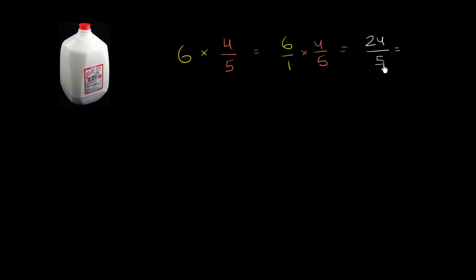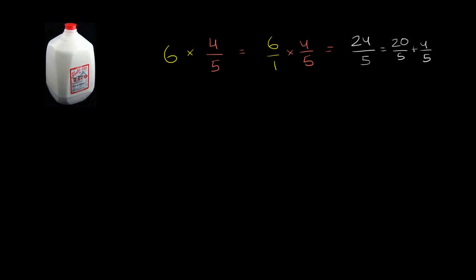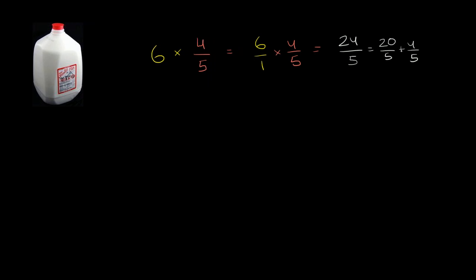And this is the same thing. 5 goes into 20 evenly and has a remainder of 4. So we could write this as 20 over 5 plus 4 over 5, which is the same thing. This is 4, so this is 4 and 4 fifths. That's one way to think about it.